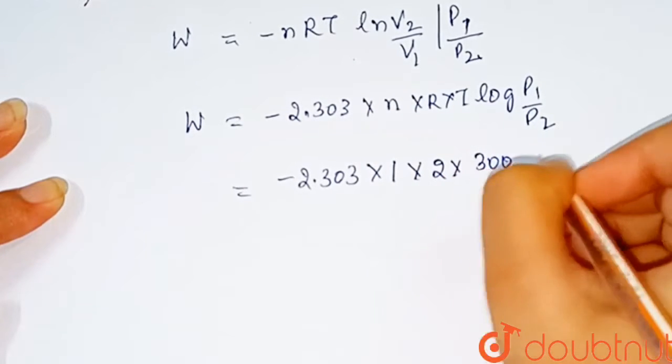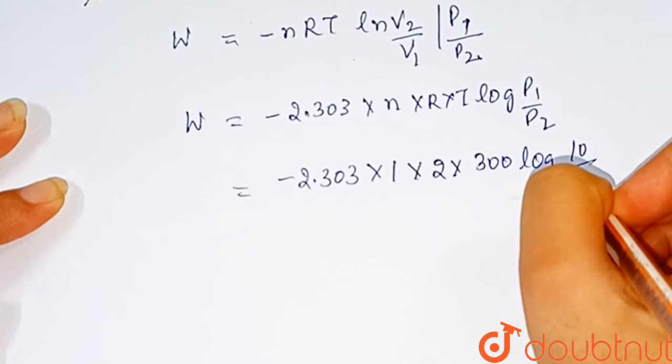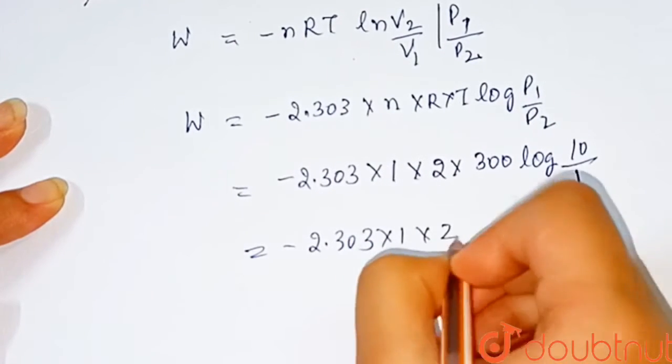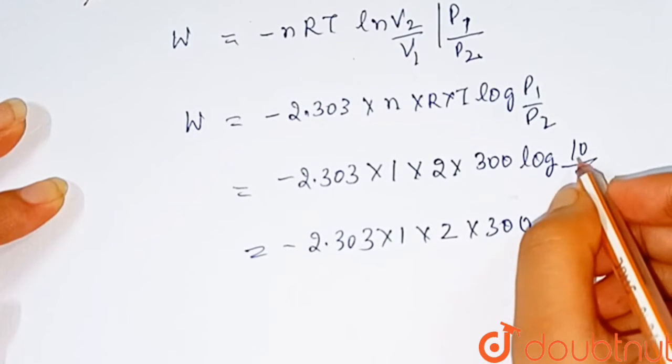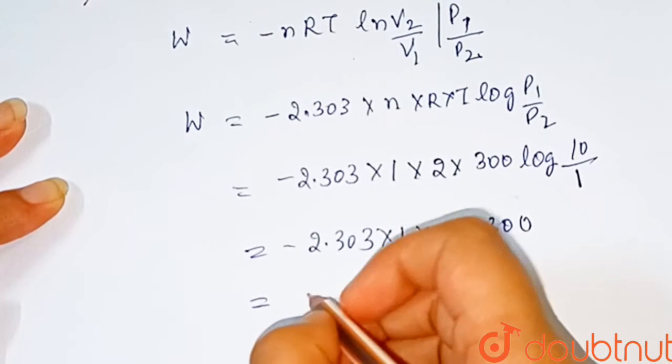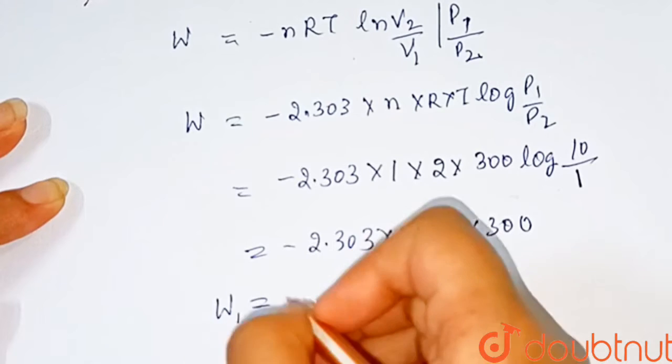Temperature is 300, log P1 is given as 10, P2 equals 1. Minus 2.303 times 1 times 2 times 300. As we know that log 10 equals 1. On solving this, work done during isothermal expansion equals minus 1381.8 calories.